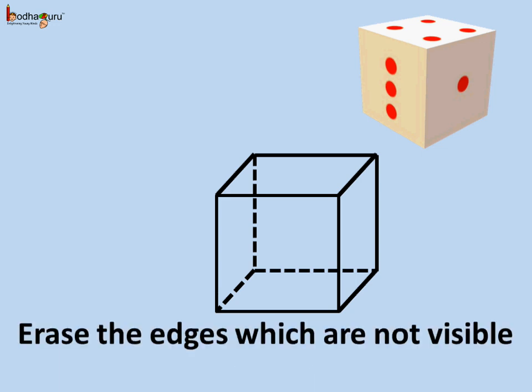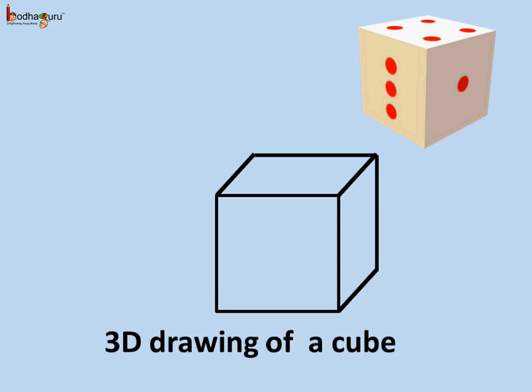To give it a more realistic look, we can even erase the edges which are not visible. That means, we remove the edges which we had shown by dotted lines. And this is how we represent the 3D model of the dice on the paper.